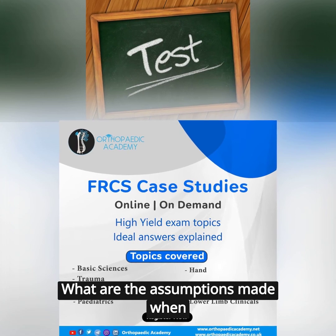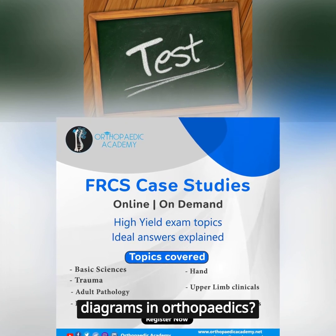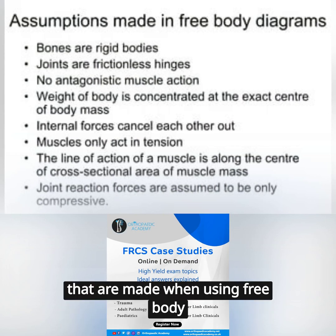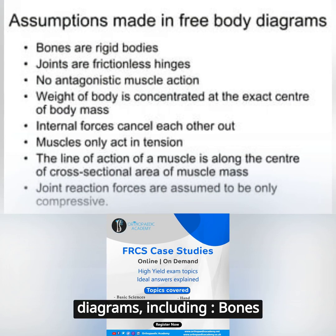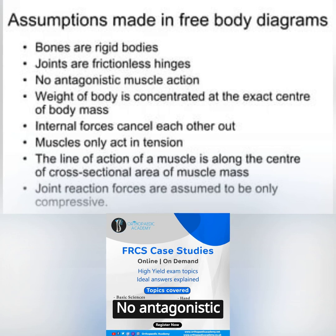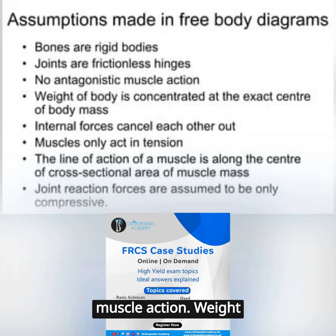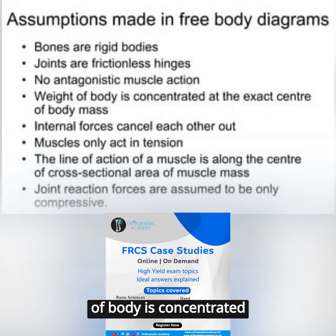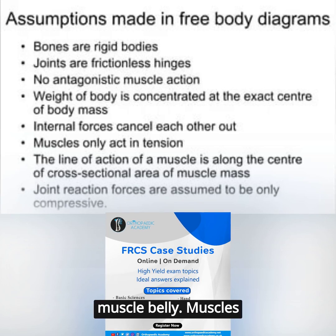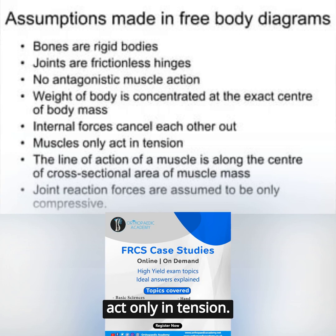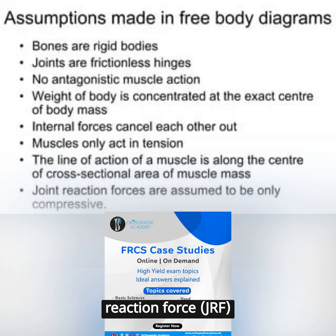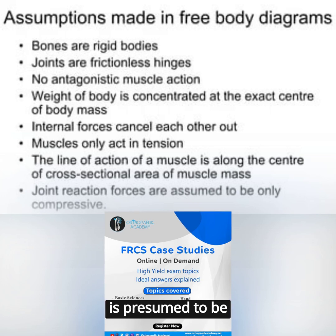What are the assumptions made when using free body diagrams in orthopaedics? There are several assumptions that are made when using free body diagrams, including: bones are rigid rods; joints are frictionless hinges; no antagonistic muscle action; weight of body is concentrated through the center of mass; force acts in the direction of the muscle belly; muscles act only in tension; internal forces cancel each other out; and joint reaction force is presumed to be compressive only.